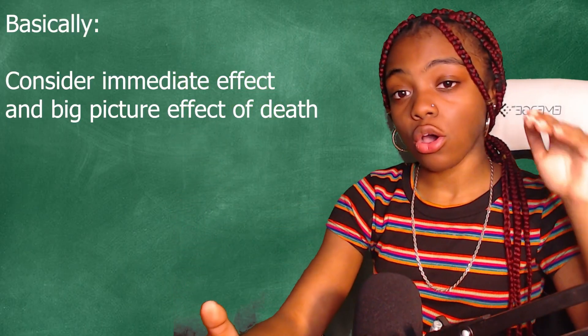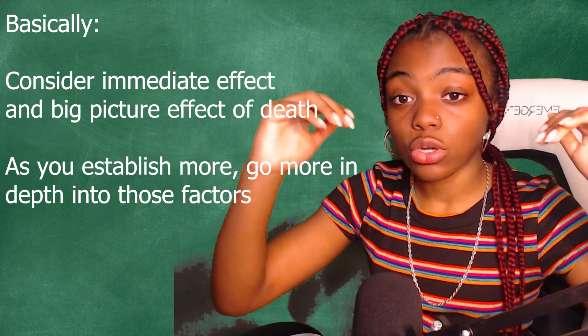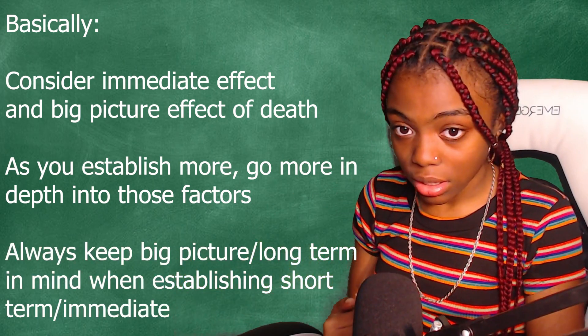Short story short: consider the immediate effect and the big picture effect with every death. You can go more in depth with each. It should always go back to the big picture, but also consider the immediate — even if characters don't have time to react yet, there should be a moment where they do. Don't make them forget about that death, especially if it was a major character. With Character A, C and D are now getting alienated from the rest of the group, because a kid got killed regardless of intention.